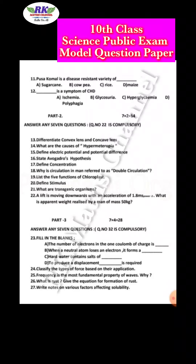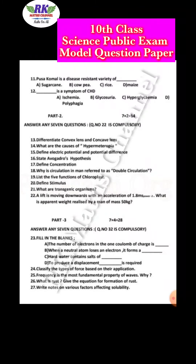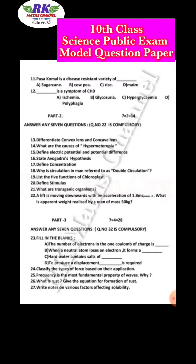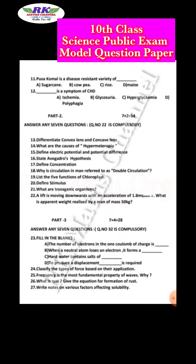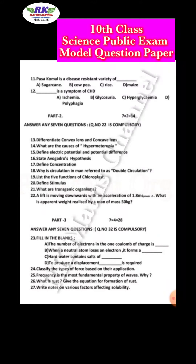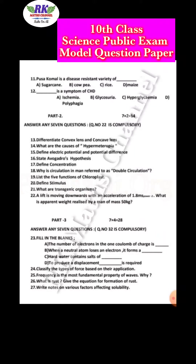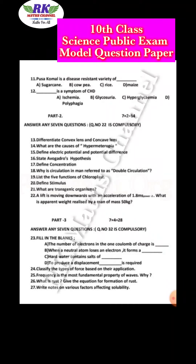Next, Part 2: answer any 7 questions. You can see question numbers 13 to 22. Question number 22 is a compulsory question. You can see 7 questions — 7 twos are 14 marks.